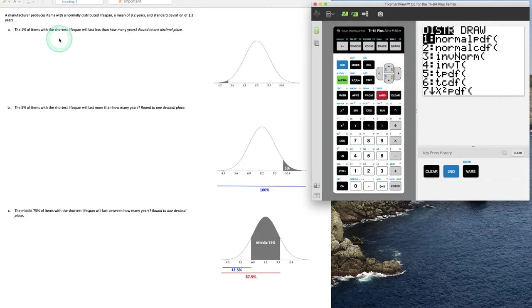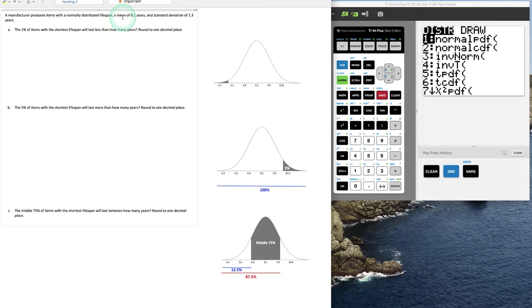So taking this example, a manufacturer produces items with a normally distributed lifespan with a mean of 8.2 years and a standard deviation of 1.3 years. The 1% of items with the shortest lifespan will last less than how many years.